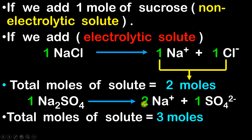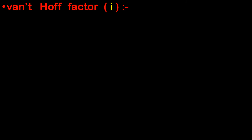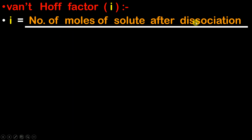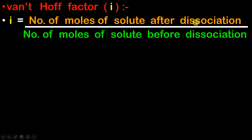On the basis of this concept, a factor was introduced that is known as the Van't Hoff factor, represented as i. The simple formula for i is nothing but the number of moles of solute after dissociation divided by the number of moles of solute before dissociation. Let us understand how to find out the value of i with the help of an example.